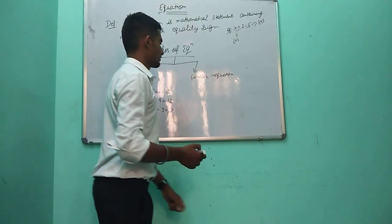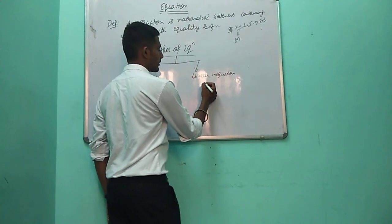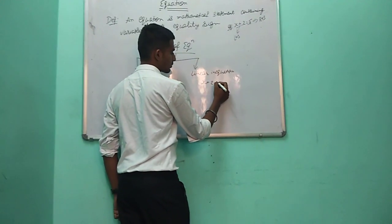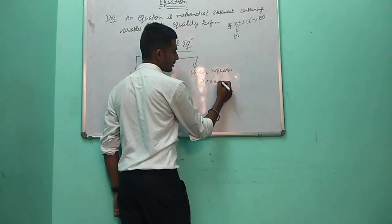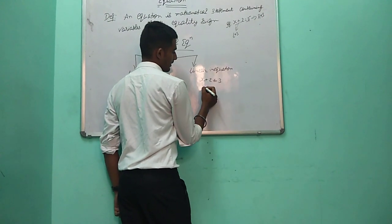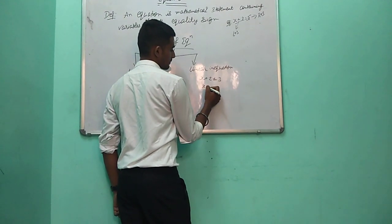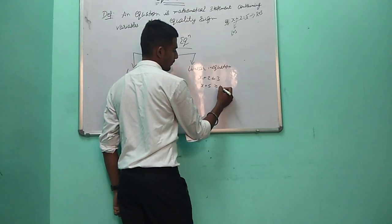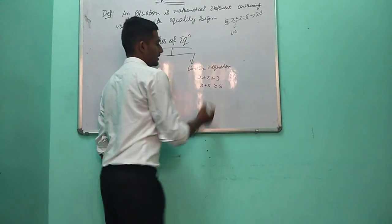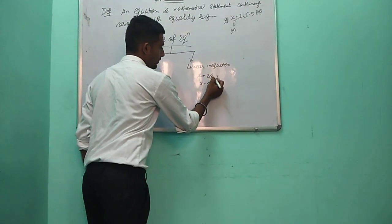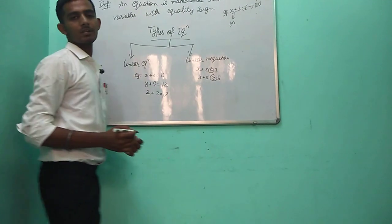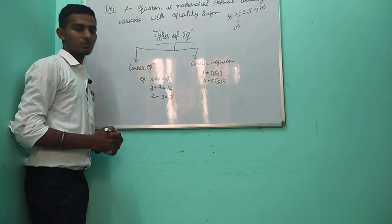And what about other equations? For example: x plus 2 is less than or equal to 3, x plus 5 is less than or equal to 5. This type of equation is also a form of linear equation.